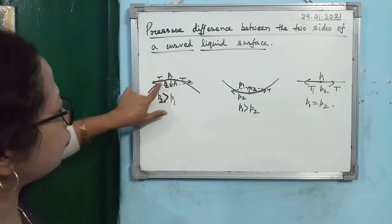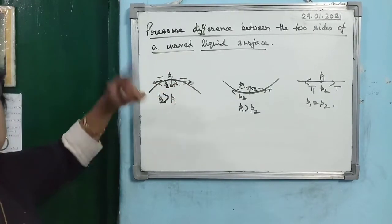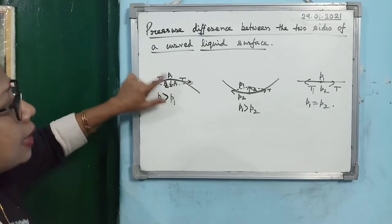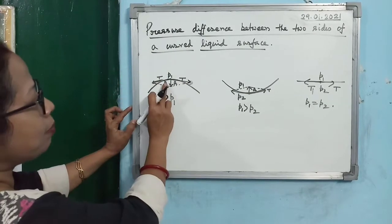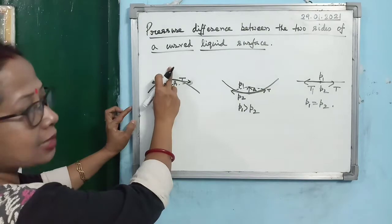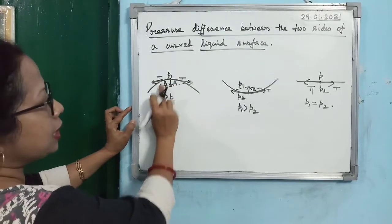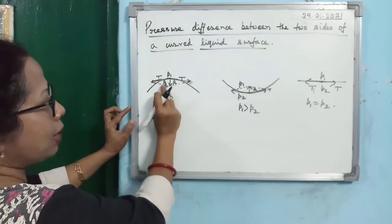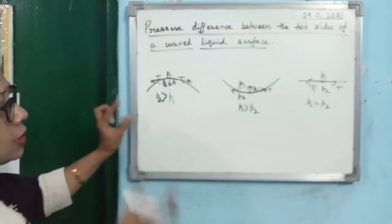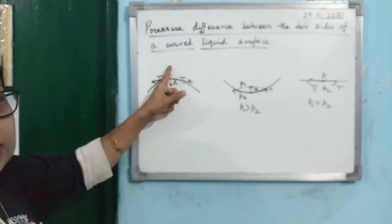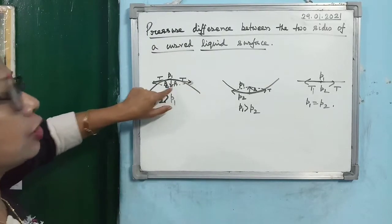In this case the surface is concave, and on the concave side pressure is more — so P2 is greater than P1. Pressure is more on the concave side and less on the other side. Due to this pressure difference, a force acts in the upward direction — from high pressure to low pressure — which balances the resultant force R.